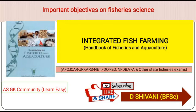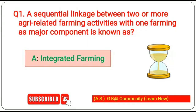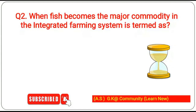I am D. Shivani, B.F.Sc. The first question: a sequential linkage between two or more agro-related farming activities, with one farming as a major component, is known as — the answer is integrated farming. Second question: when fish becomes the major commodity in the integrated farming system, it is termed as —